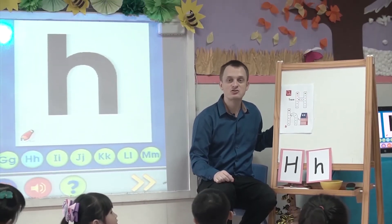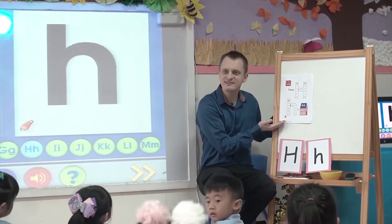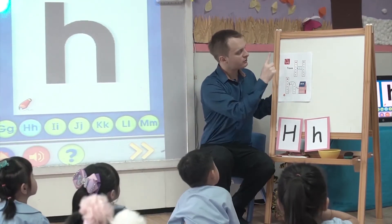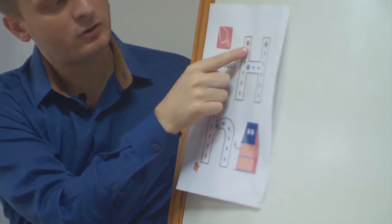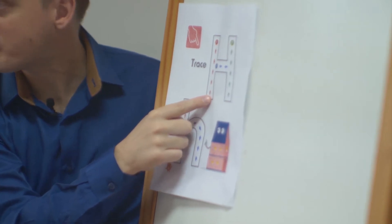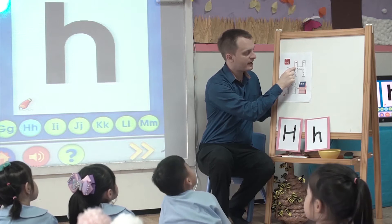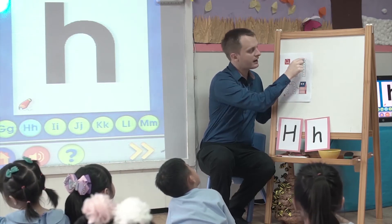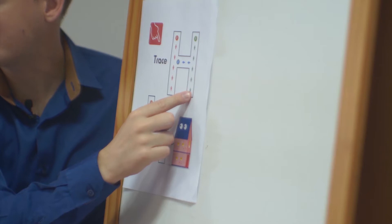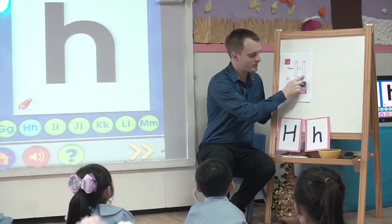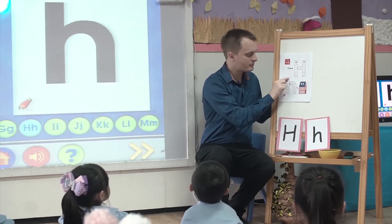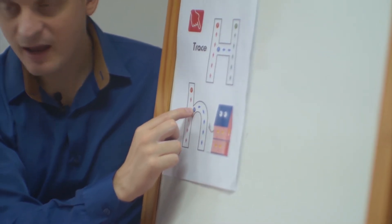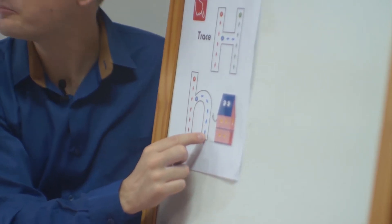I'm going to trace the letter H with my finger. I pull my finger down from the top to the bottom for the first stroke, then I go into the middle and go from left to right, then I go from the top to the bottom again. That's the uppercase H. To make the lowercase H, I pull my finger down to the bottom, then up to halfway, make a curvy shape, and then come down.